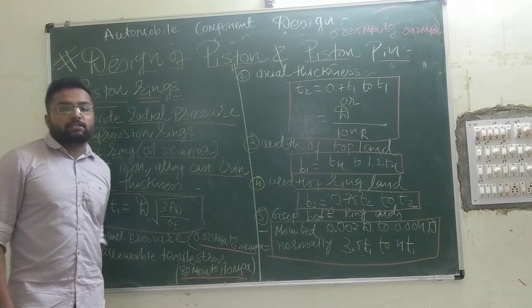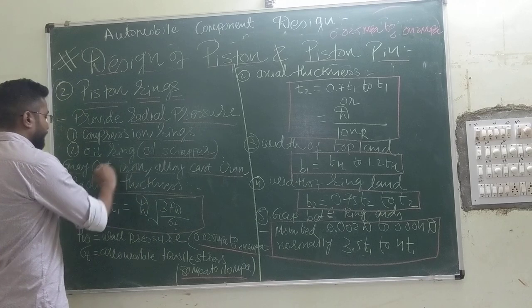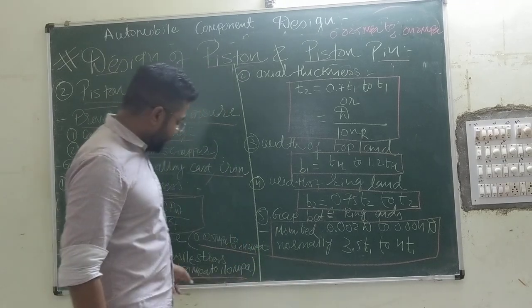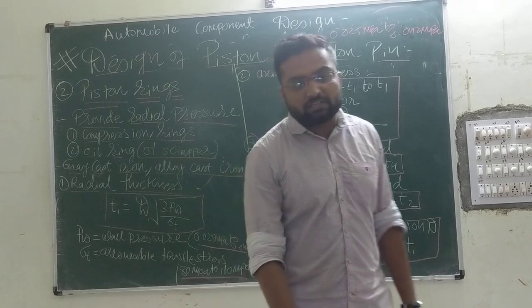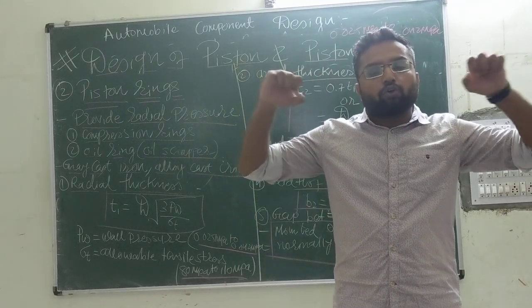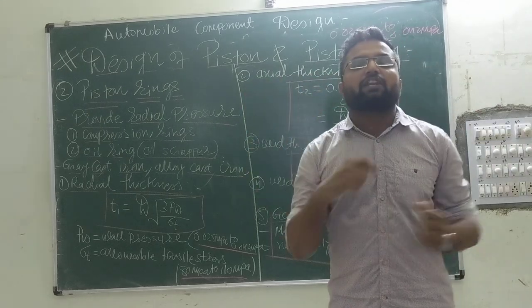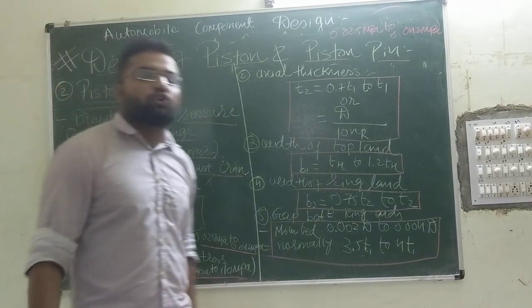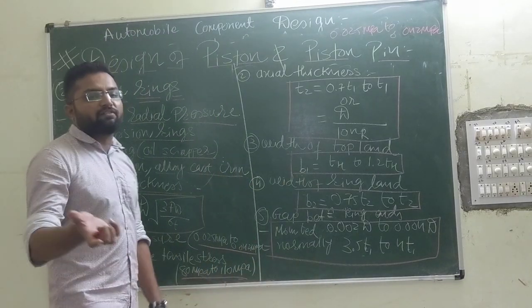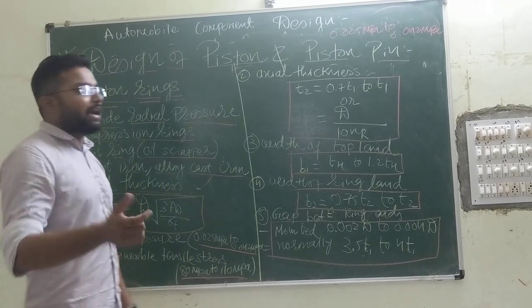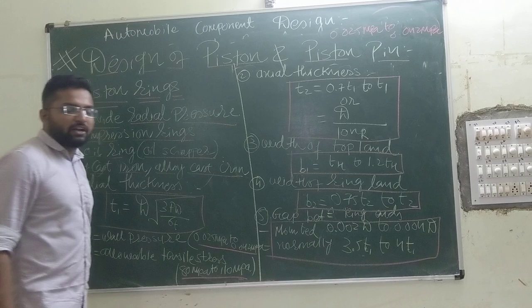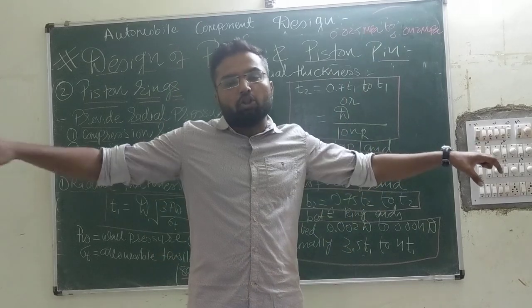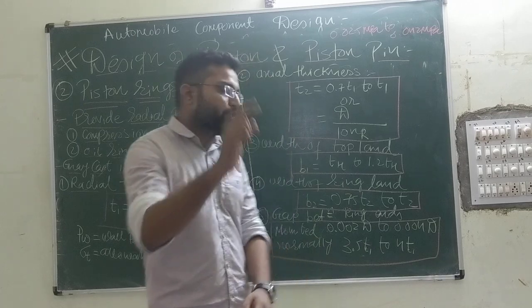The allowable tensile stress for the ring material — grey cast iron or alloy cast iron — will be higher compared to other materials because this ring comes under tensile stress. The pressure will try to close it from its open end and will create tension in the rim. The allowable tensile stress is between 80 MPa to 110 MPa. This radial thickness T1 is the thickness of the strip which is converted or forged into our ring.